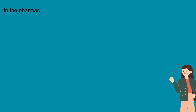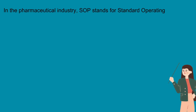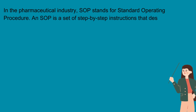In the pharmaceutical industry, SOP stands for Standard Operating Procedure. Standard Operating Procedure is a set of step-by-step instructions that describe how to perform a routine task.